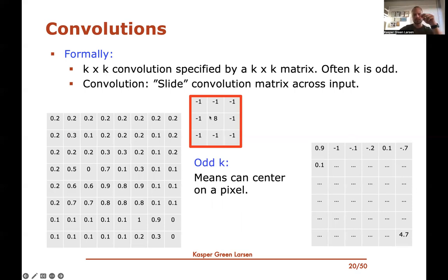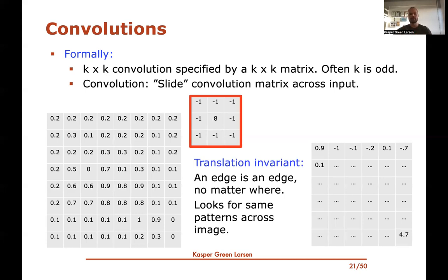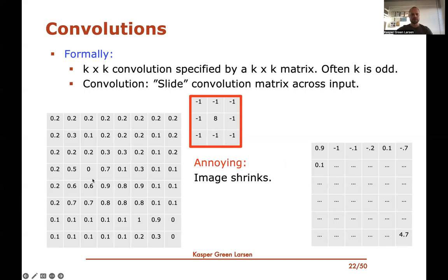This convolution is translation invariant: whether the cat is in the left or right part of the image doesn't matter. As we slide the convolution, the local computation is exactly the same regardless of where we are in the image — we're looking for the same things everywhere. And we preserve locality: we store the output at the same position where the edge was found, so we remember where we saw it.